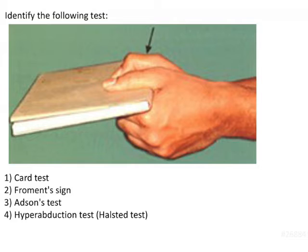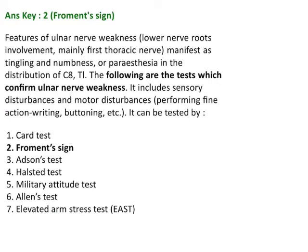All these options are tests useful for evaluating ulnar nerve weakness. These features of ulnar nerve weakness mostly come under the first thoracic nerve. They mainly manifest as paresthesia in C8 and T1.